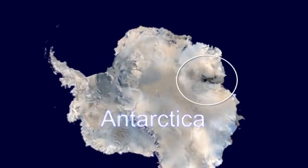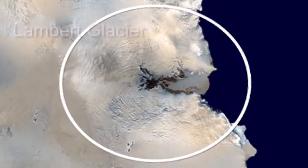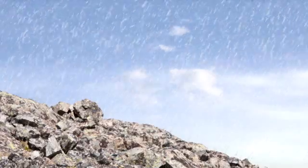Earth's largest glacier is Eastern Antarctica's Lambert Glacier, which is about 60 miles wide, over 250 miles long, and over 8,000 feet thick.